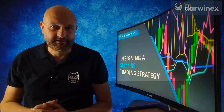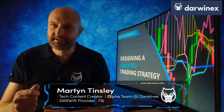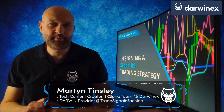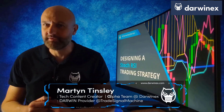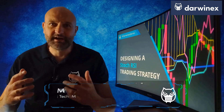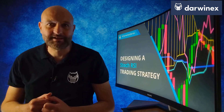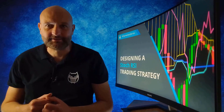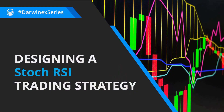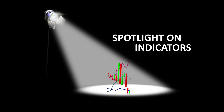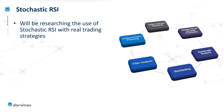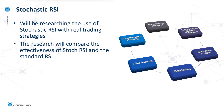Whenever comparing indicators, it's important to follow a process that isn't unfairly biased towards the characteristics of one of the indicators. Today I start to design an overbought oversold strategy using the stochastic RSI and the standard RSI indicators. The design of this strategy is part of what I'm calling the Spotlight on Indicators series, so that I can compare the stochastic RSI with the standard RSI when used as part of a real trading strategy.